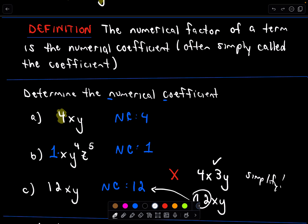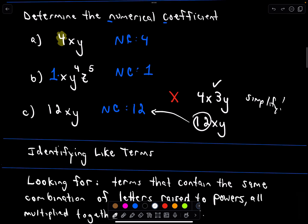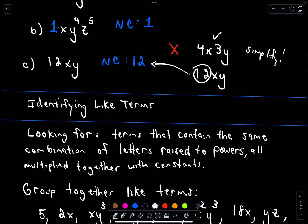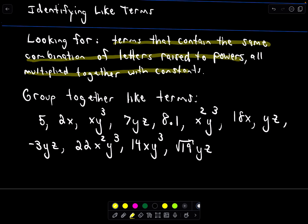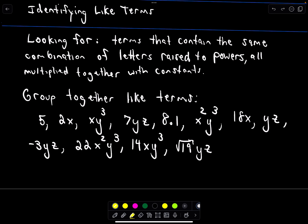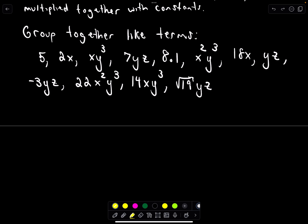Numerical coefficient — I hardly ever hear it called that. People usually just call it a coefficient: it's just the number associated with that term. Now, identifying like terms. We're looking for terms that contain the same combination of letters raised to powers, all multiplied together with some constants. Ultimately, we want to simplify them, and all of mine are already simplified.